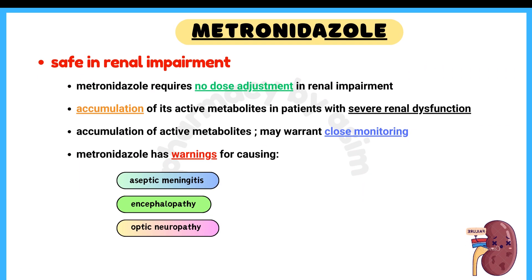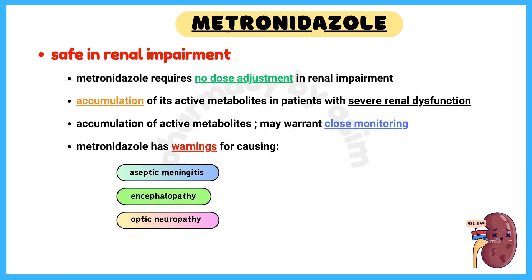Number 6: Safe in Renal Impairment. Metronidazole requires no dose adjustment in renal impairment. However, accumulation of its active metabolites may warrant close monitoring. Metronidazole has warnings for causing aseptic meningitis, encephalopathy, and optic neuropathy if accumulation of metabolites occurs.